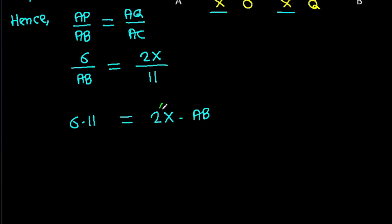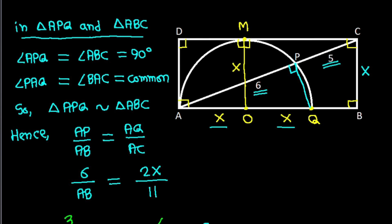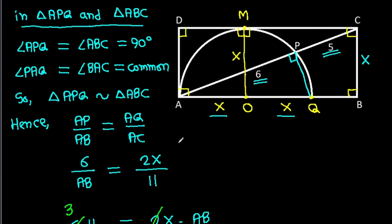And 2 times 3 is 6. So it is 3 times 11 equals X times AB. And 33 is X times AB. So AB will be 33 over X.